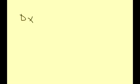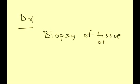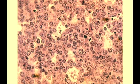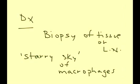Diagnosis involves a biopsy of the tissue or lymph node. What you will see is a very characteristic pattern of macrophages known as the starry sky appearance — here is a picture of what it looks like, which is very characteristic on pathology. The treatment of Burkitt's involves chemotherapy.